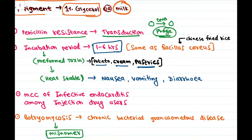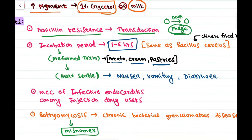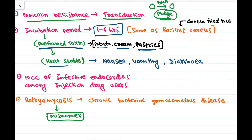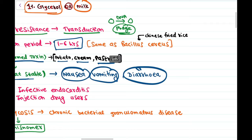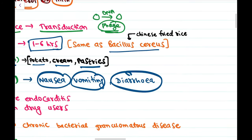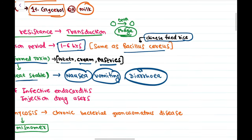The food sources involved are potato, cream, or pastries infected with this toxin, which is a preformed heat-stable toxin. Symptoms are nausea, vomiting, and diarrhea. The incubation period is the same as for Bacillus cereus (from Chinese fried rice ingestion), which also involves a preformed toxin.